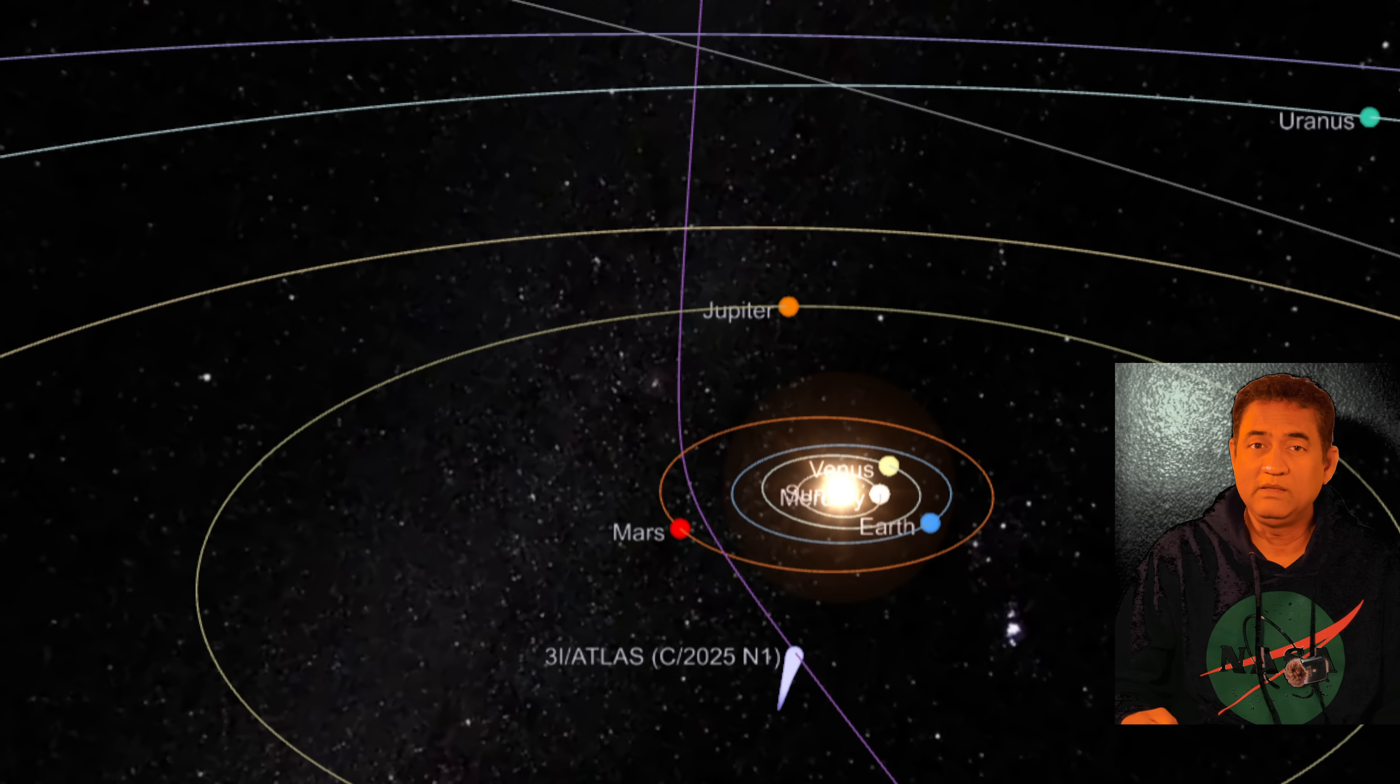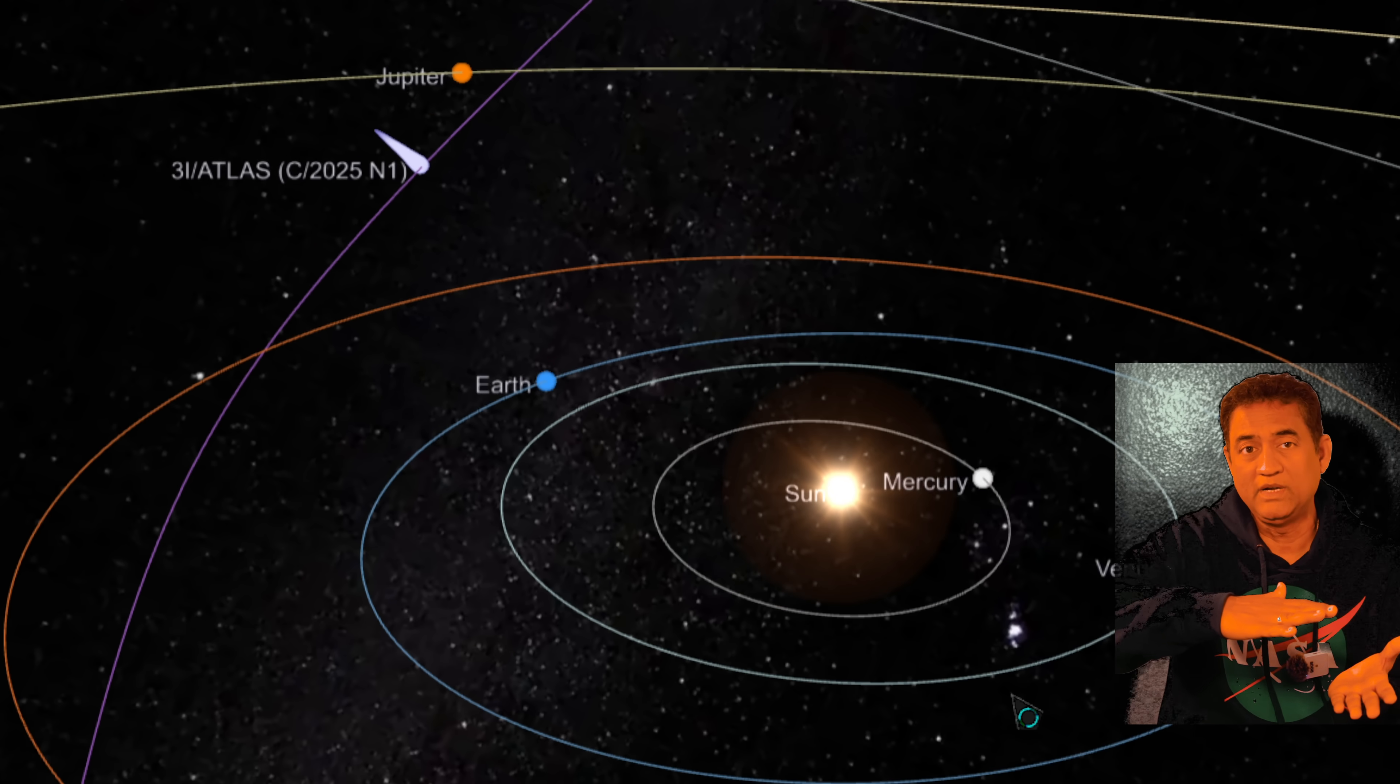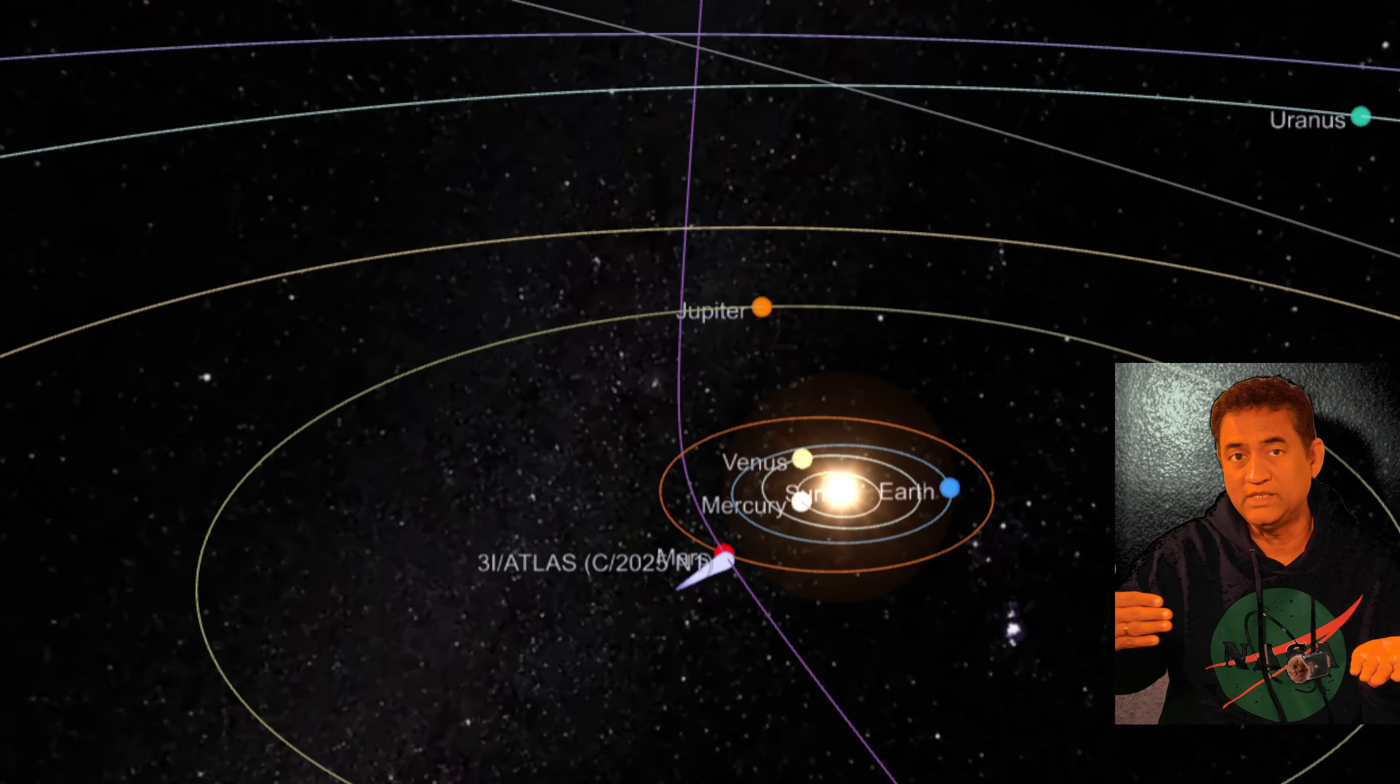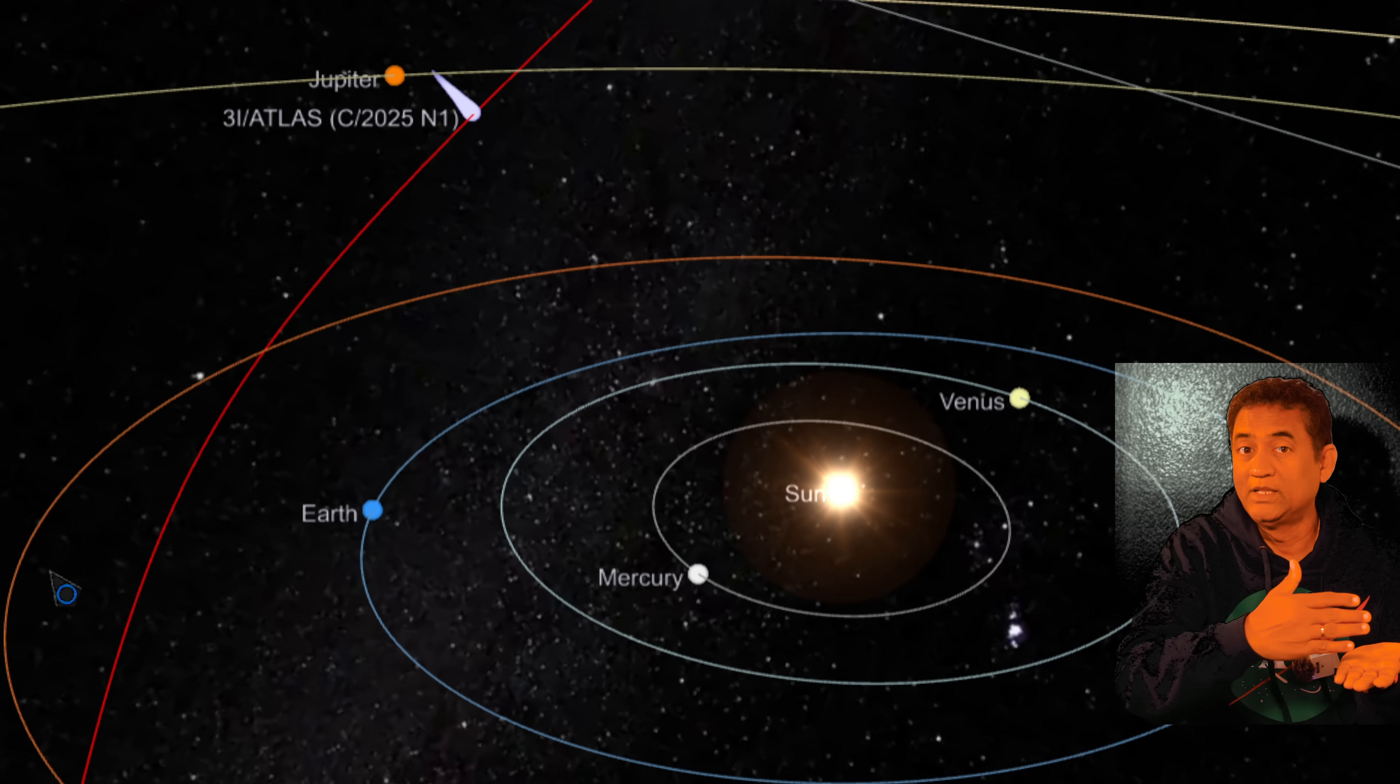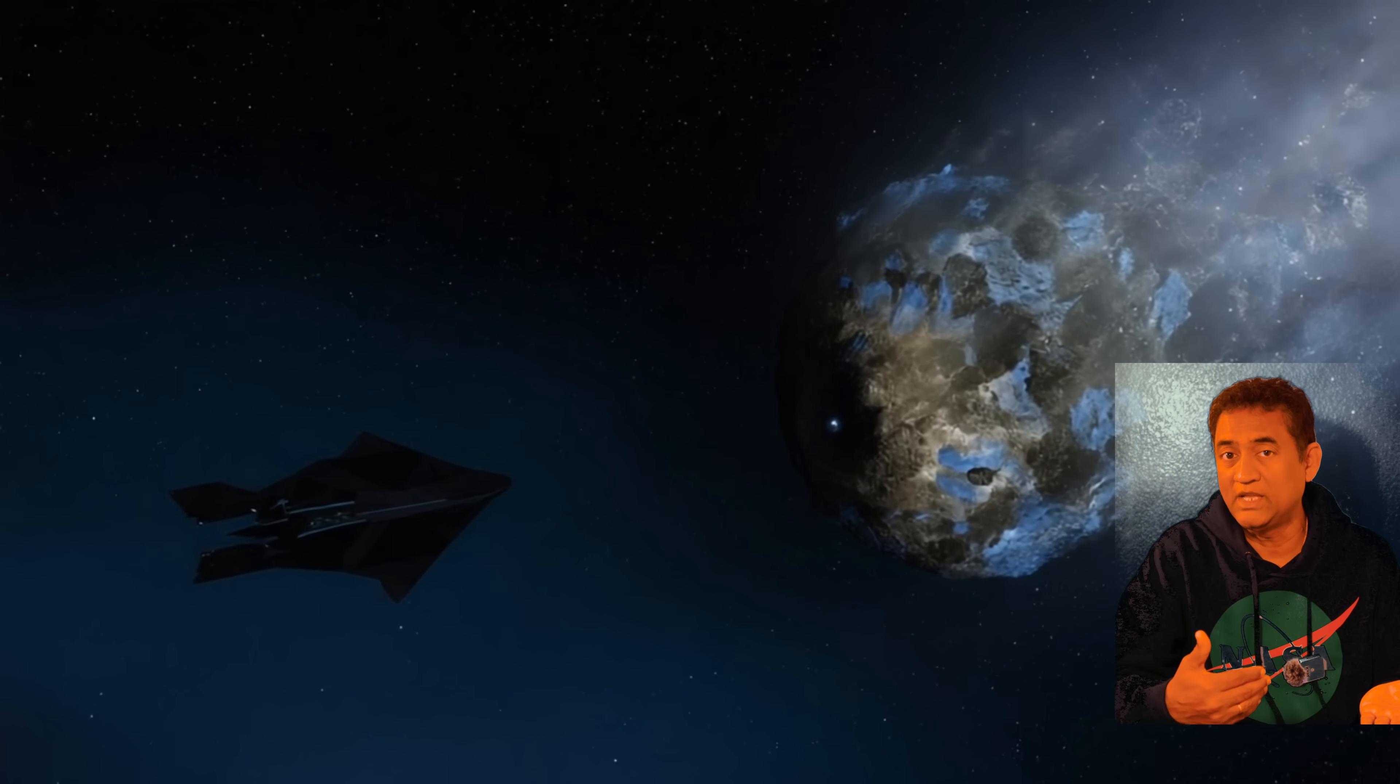What makes Atlas even stranger is the path it is taking. It is on a retrograde orbit, tilted about 175 degrees against the flow of the planets. That means while all the planets orbit one way around the Sun, Atlas is slicing through the opposite direction, almost perfectly aligned to the plane of the solar system but going against the traffic. The orbit is a coincidence so rare that some scientists are wondering, is it just luck or did some object nudge this planet into this path? Maybe a star, maybe something else.